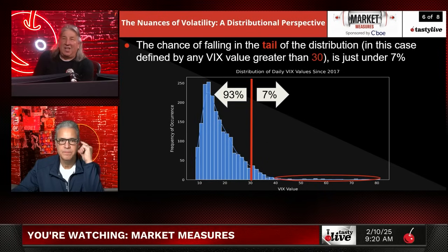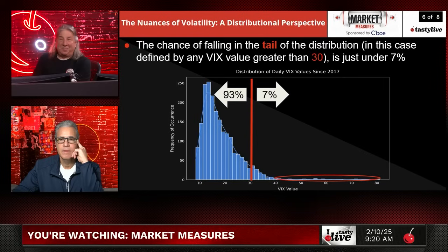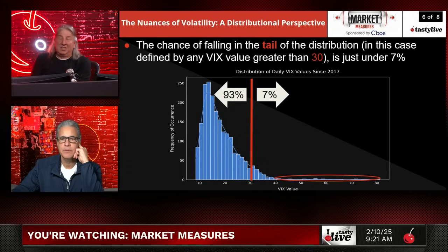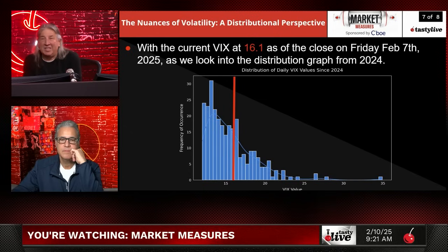The chances of falling into the tail of the distribution — defined here by a VIX value greater than 30 — is just under 7%. Rarely do we get a VIX over 30. I would have said the number was closer to 5% or 2%, and over 35 it's probably closer to 2–3%. But at 30, it's 7%, meaning 93% of readings are below that. With the current VIX at 16.1 as of close on Friday February 7th, the 2024 distribution graph doesn't look dramatically different.